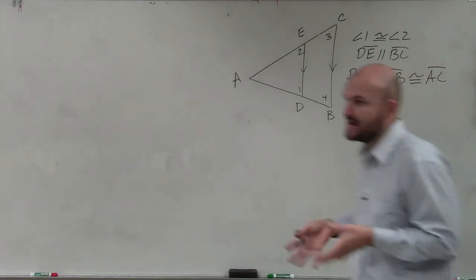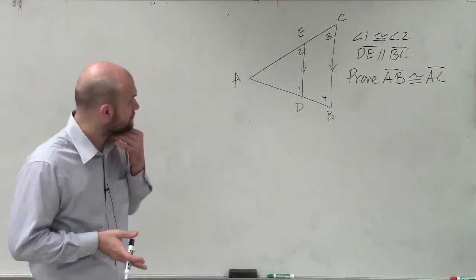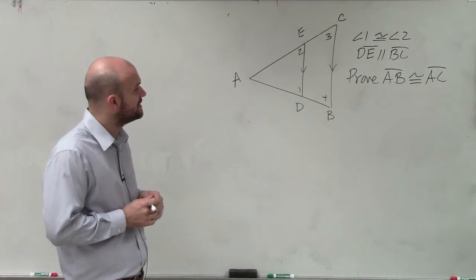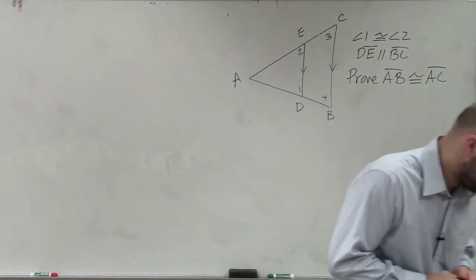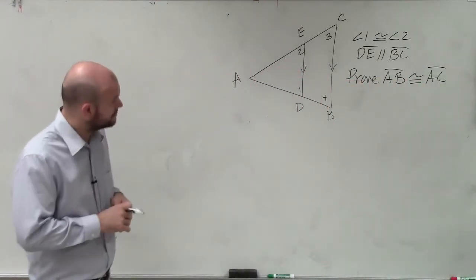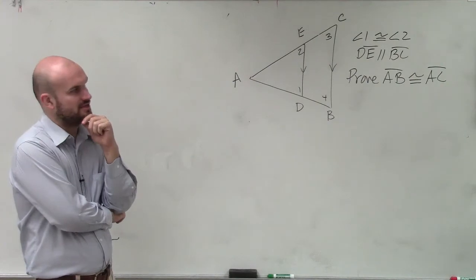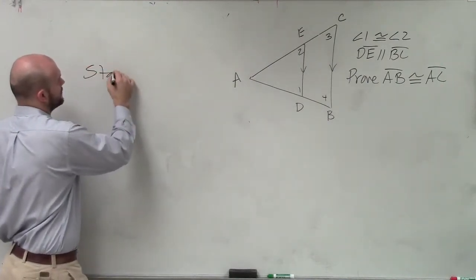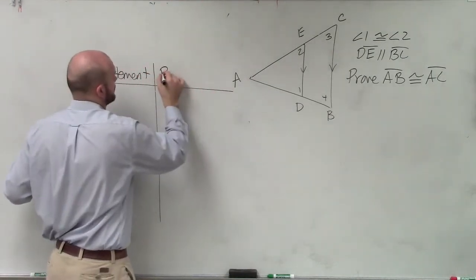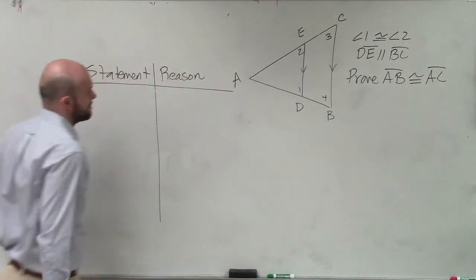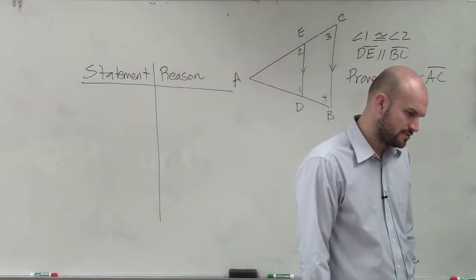A lot of times when I see a triangle within another triangle, we're trying to prove that lines are congruent — in this case, that line AB is congruent to line AC. So to do that, let's write down some of the things we can figure out. Let's do a statement-reason proof to prove AB is congruent to AC.